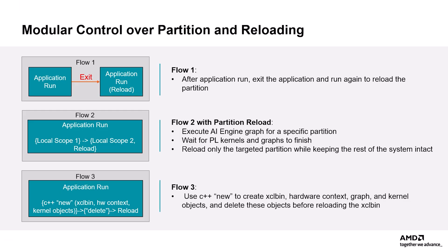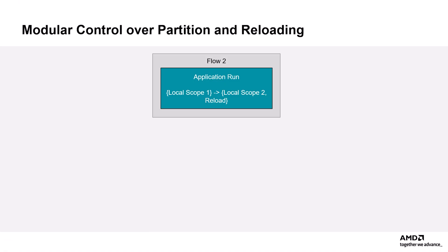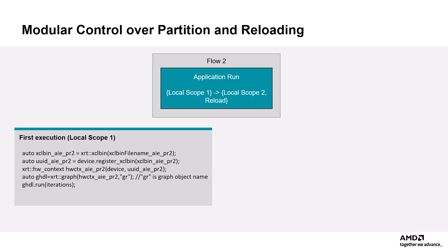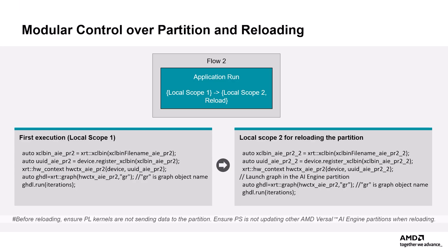Flow three involves using the C++ new keyword to dynamically allocate objects such as the XCL bin, hardware context, graph, and kernel. These objects can be deallocated using the delete keyword before reloading the XCL bin. In local scope one, we first execute the graph for partition PR2, wait for the PL kernels and graphs to finish, then move on to local scope two, where we reload the partition with updated configurations. The rest of the system, including other partitions, remains unaffected. This dynamic reloading allows for faster iterations and improved control over the application, enabling efficient partition management, targeted reloads, and avoiding the need for a full system reset.